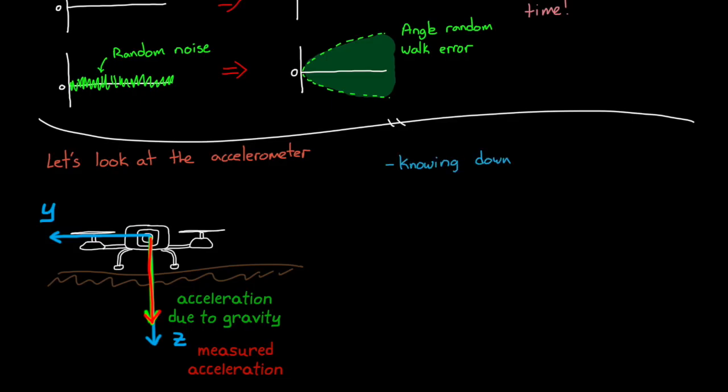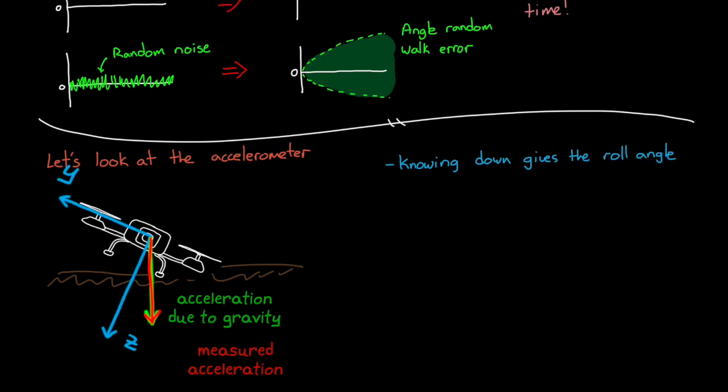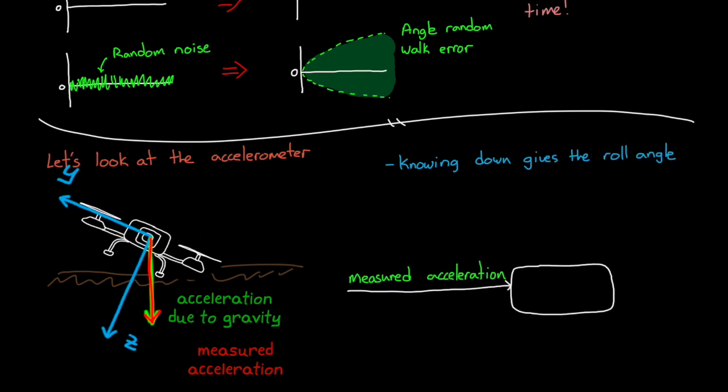Now the drone knows which direction is down, and knowing down relative to the drone reference frame, it can determine the roll angle. A simple way to do this is to just take the arctangent of the acceleration in the y and z direction to get angle.